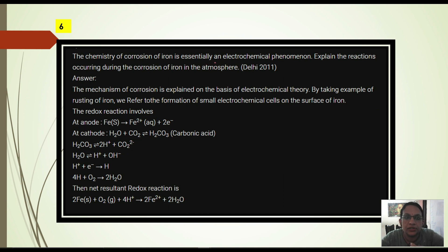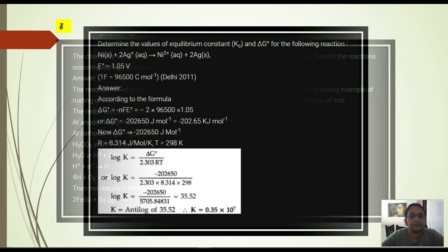Chemistry of corrosion of iron is essentially an electrochemical phenomena. Explain the reaction occurring during the corrosion of iron in atmosphere. You all know that corrosion is explained by electrochemical theory. Rusting of iron involves cathode and anode. What reaction is at cathode and anode? At anode, iron gets converted into Fe2+ and 2 electrons are released in the aqueous medium. At cathode, water is reacting with carbon dioxide and carbonic acid is formed. And here equilibrium exists. So this H2CO3 is in equilibrium with 2H+ and CO3 2-. Water gives H+ and OH-. Hydrogen accepts electrons. 4 hydrogen with 1 oxygen molecule forms 2 water molecules. Net overall redox reaction: 2Fe + O2 + 4H+ gives 2Fe2+ and 2 water molecules.